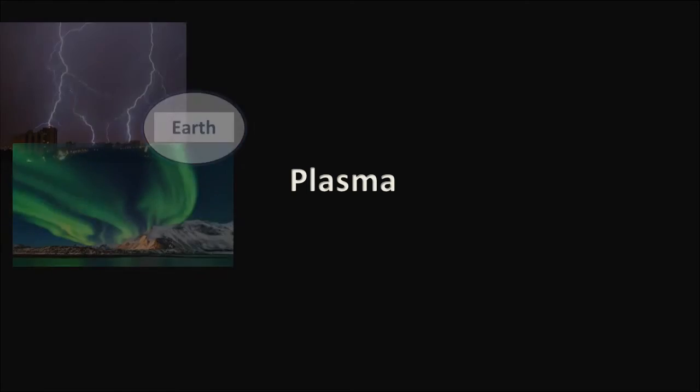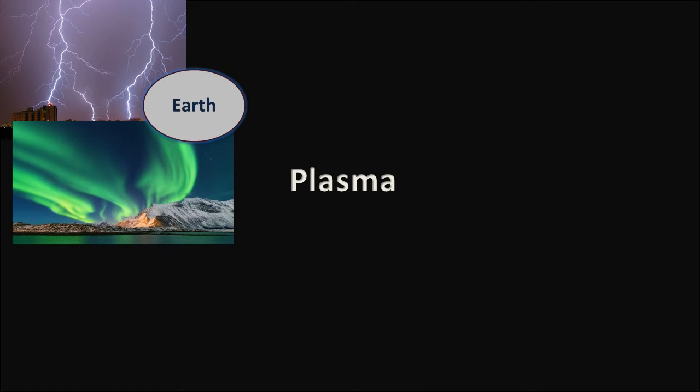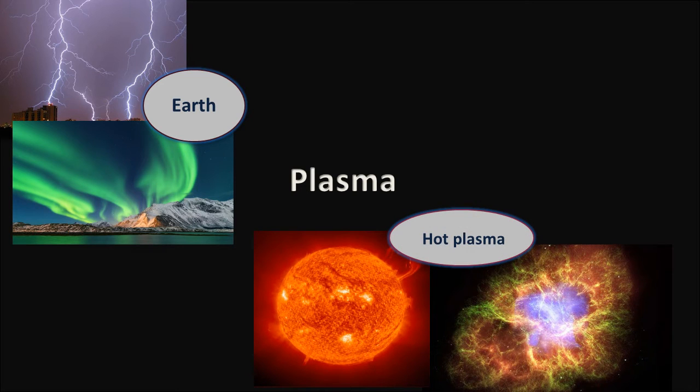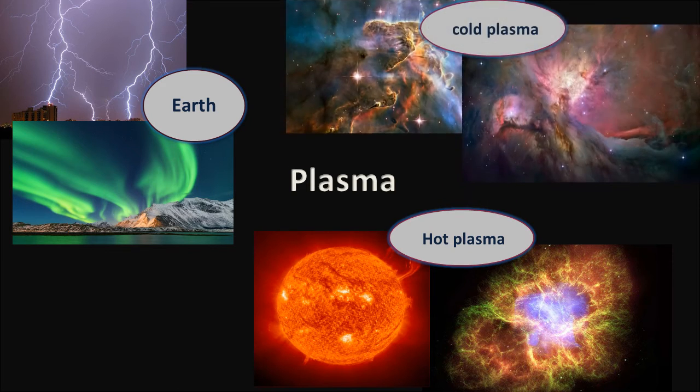Although plasma exists in very limited areas on Earth like the Earth's ionosphere, fire flames and lightning, it is the most abundant form of ordinary matter in the universe. For example, the sun and stars are made of very hot and dense plasmas while much of the interstellar space is filled with cold and underdense or rarefied plasmas.